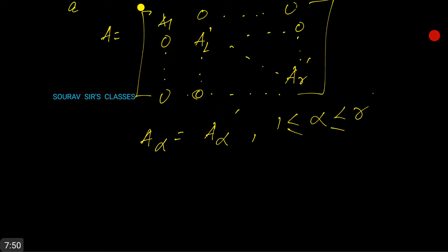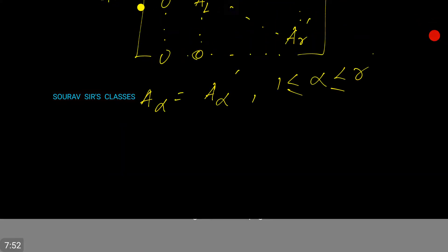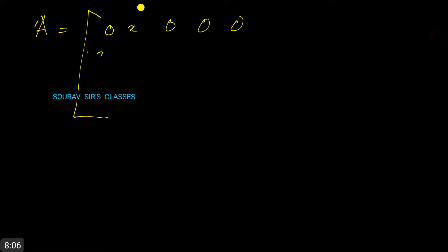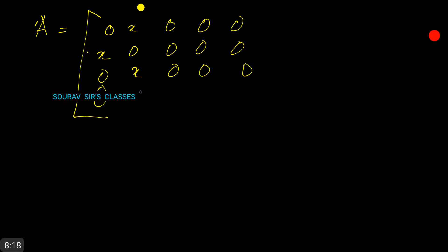Consider a matrix A which is a 5×5 matrix with entries: x on the diagonal positions and zeros elsewhere in a specific pattern — first row [0,x,0,0,0], second row [x,0,0,0,0], third row [0,0,x,0,0], fourth row [0,0,0,0,0], and last row [0,0,0,0,0].